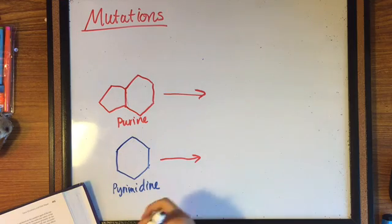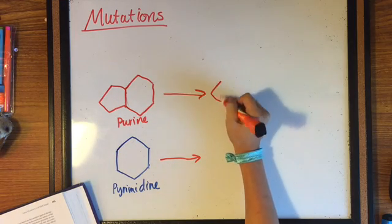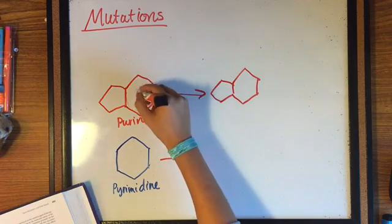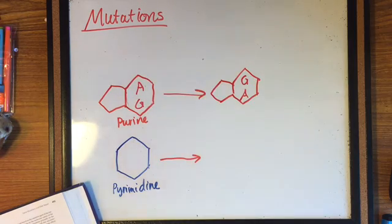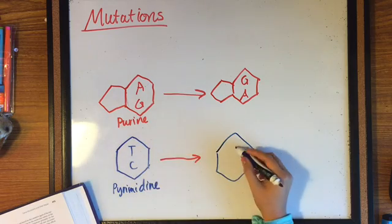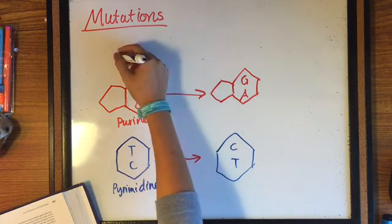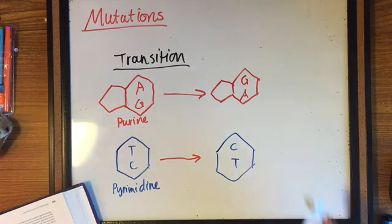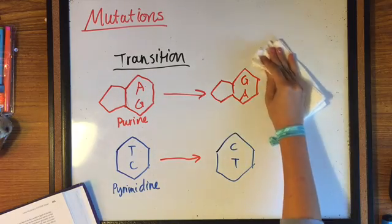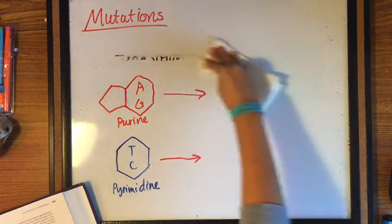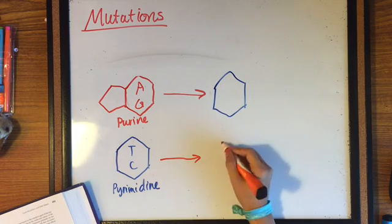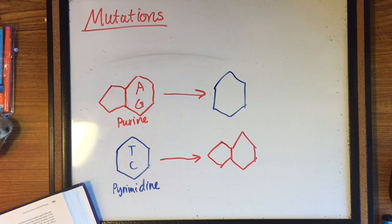Base substitutions include transition and transversion. Transition is a substitution of a purine for a purine or a pyrimidine for a pyrimidine. Remember that purines have two rings and consist of A and G, and pyrimidines have one ring consisting of C and T. Transversion, on the other hand, is a substitution of a pyrimidine for a purine or of a purine for a pyrimidine.